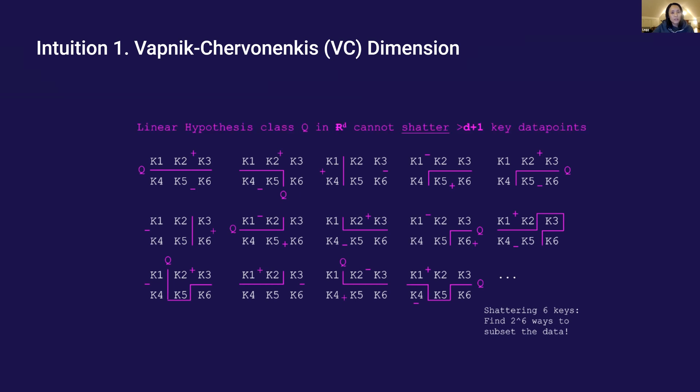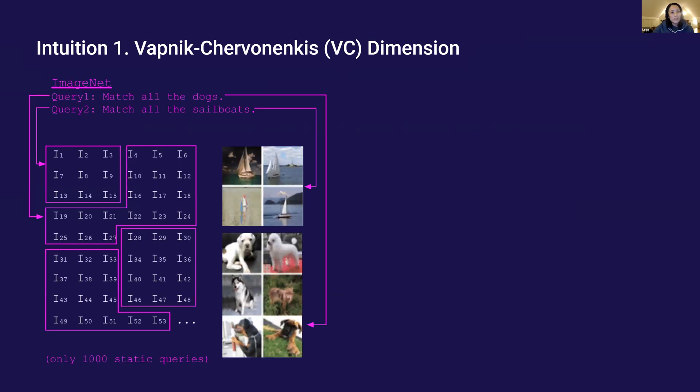In general, if our queries are limited by the vector dimension D, the VC theory states that they cannot match with all possible subsets of D plus one keys. In datasets like ImageNet, there are only a thousand labels. In the contrastive model setup, this corresponds to a thousand static queries, for example, match all the dogs. So model performance is far from hitting the limits imposed by the vector's VC dimension.